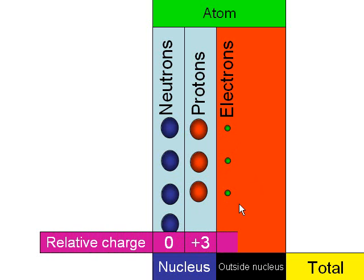When we look at the relative charge of the atom overall, we can see that the protons and electrons have a relative charge of plus three and minus three. Therefore they cancel each other out, giving an overall charge of zero.